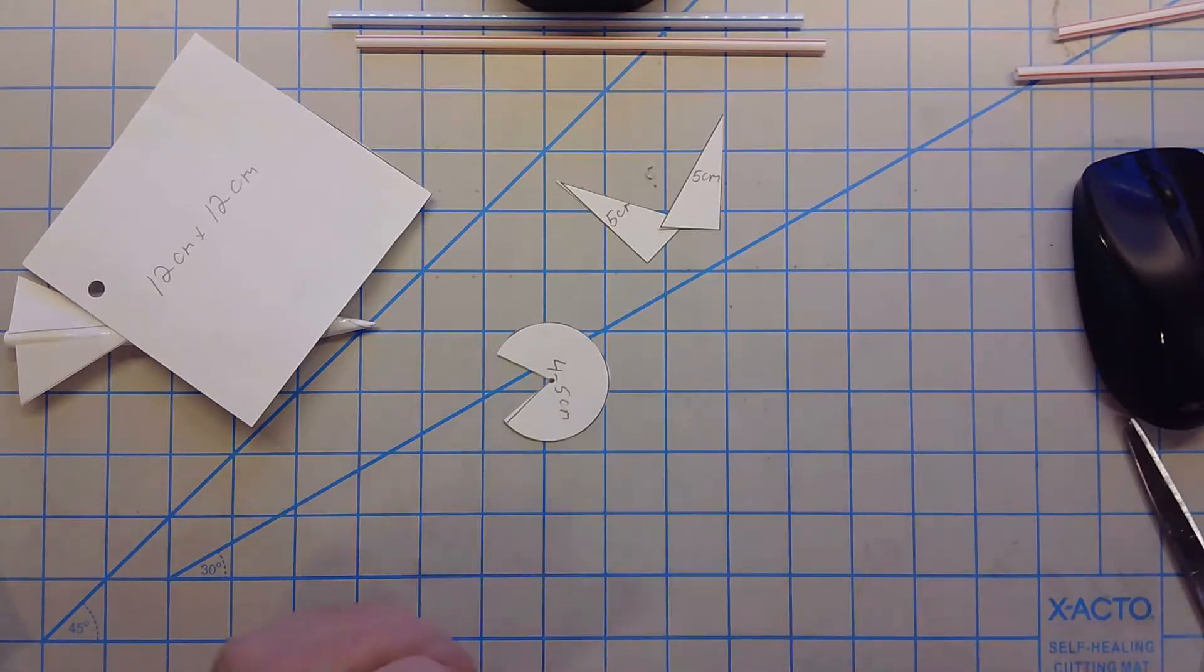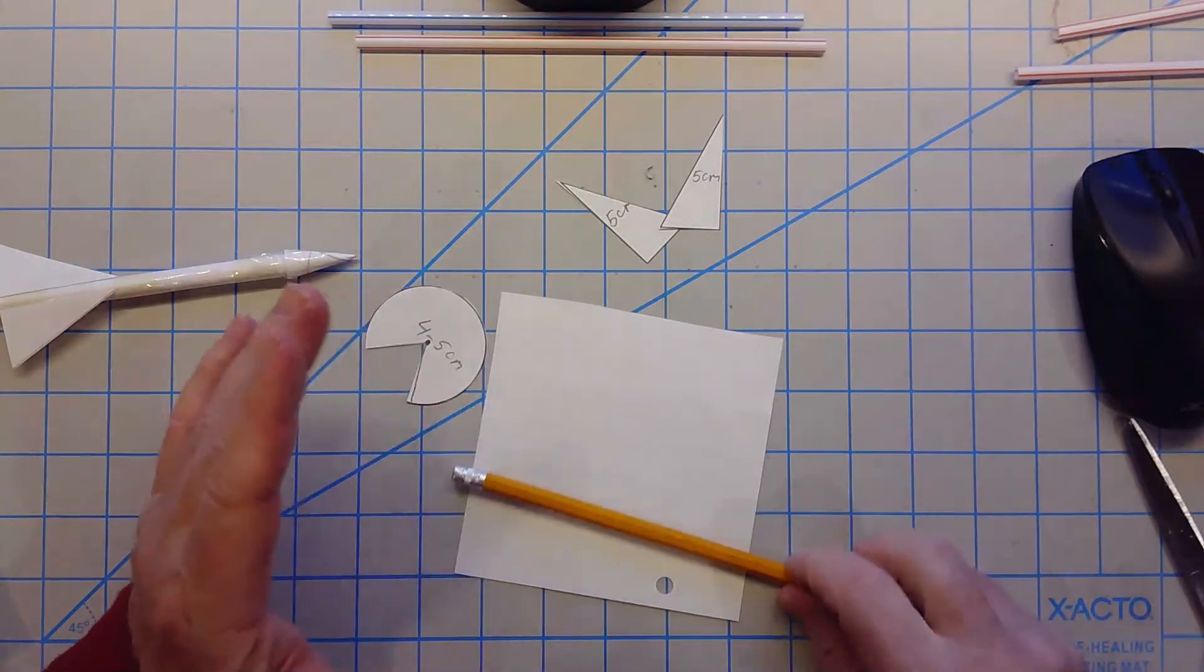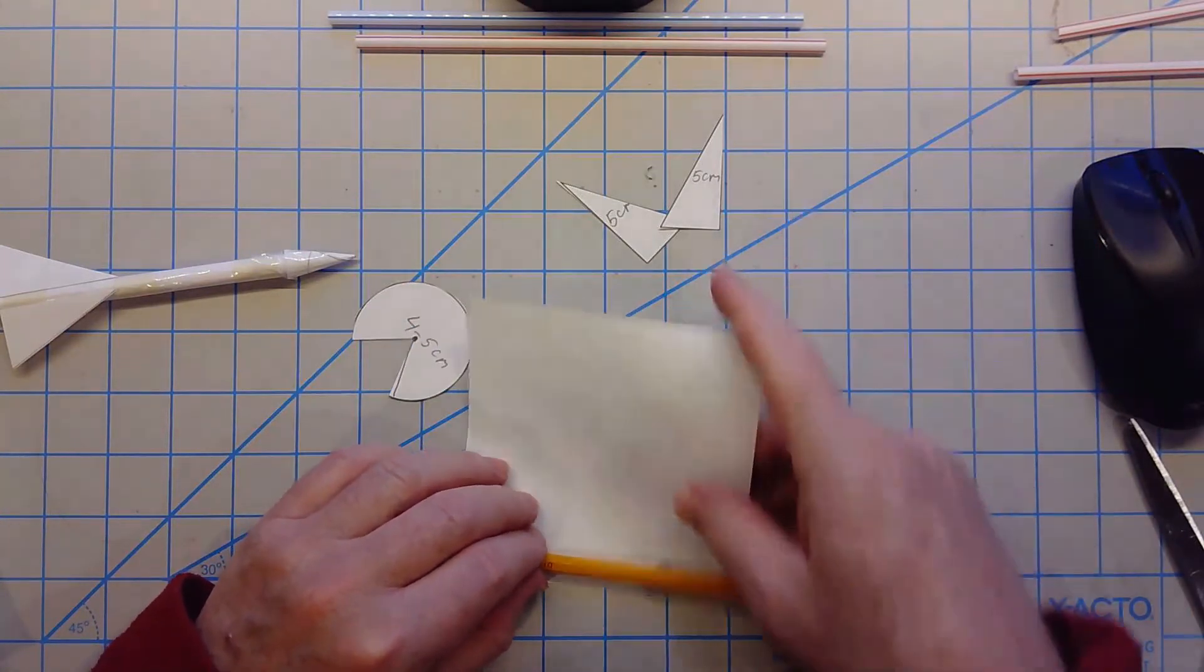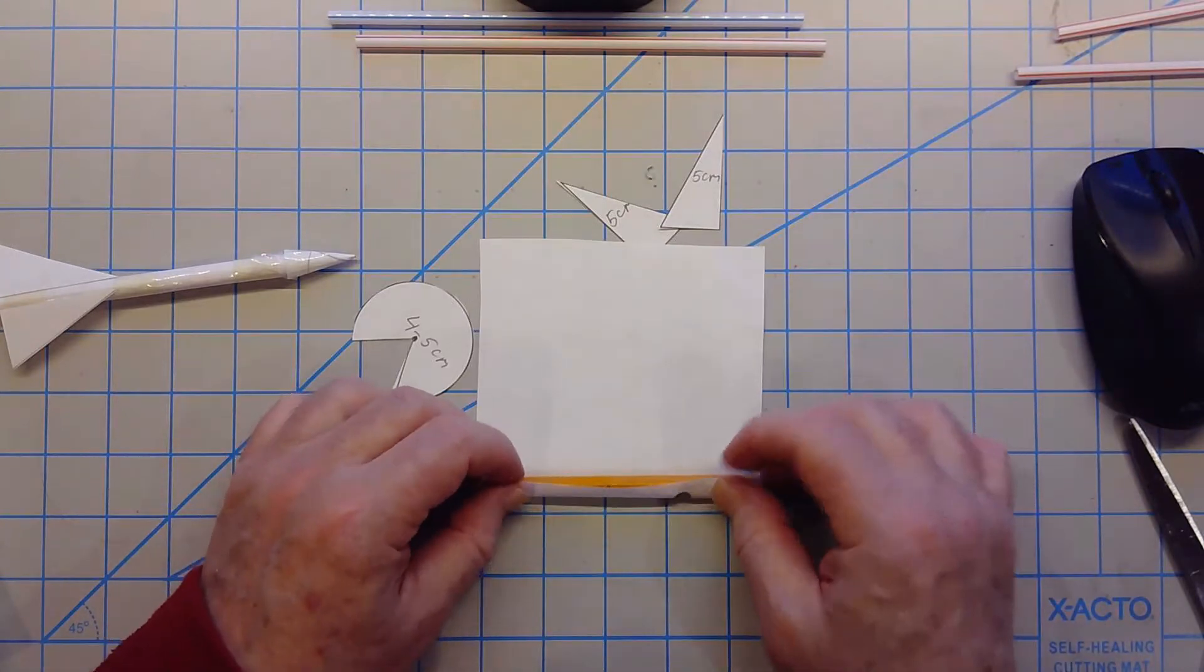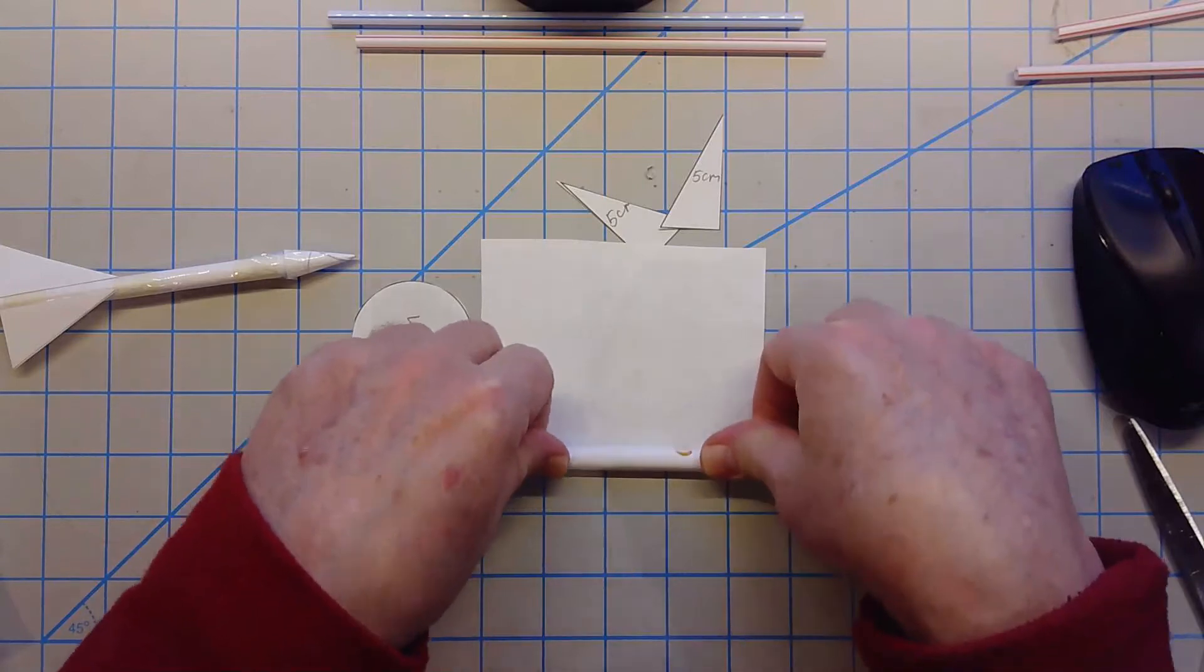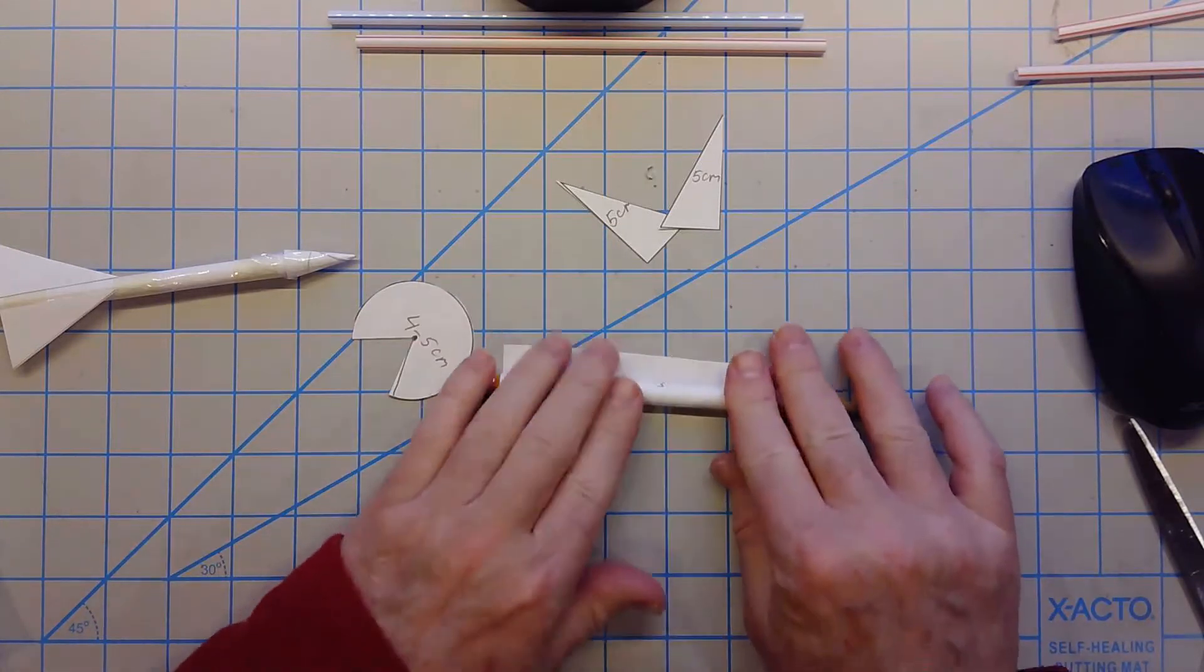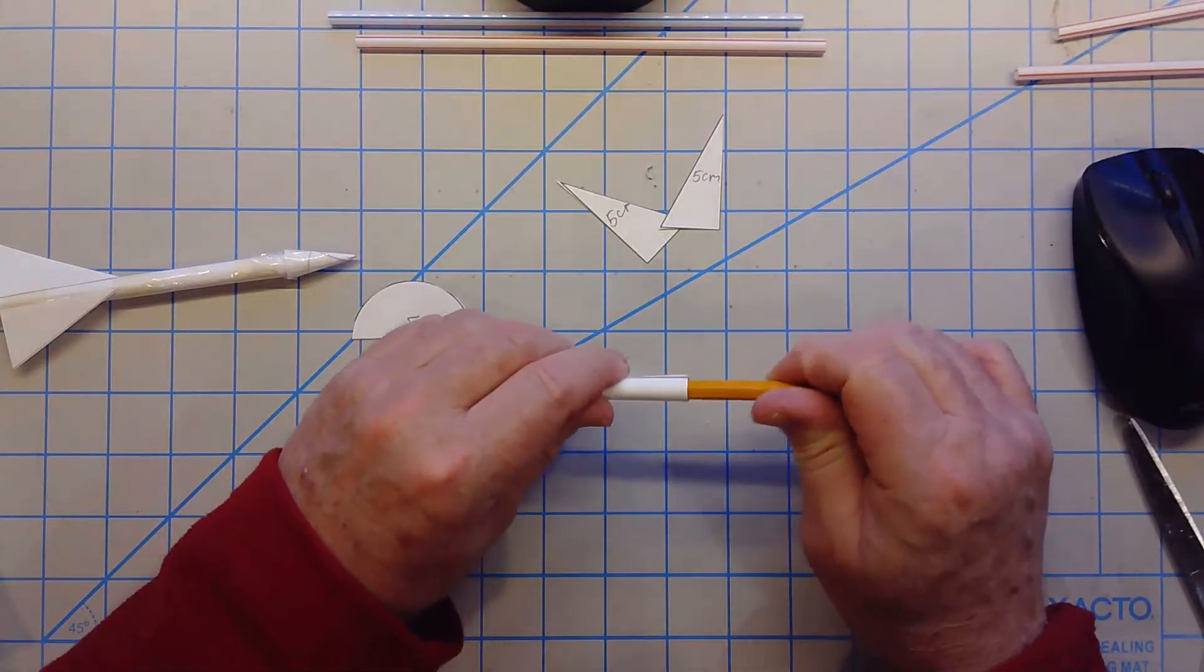Now first thing you do, because it's called a pencil rocket, you need a pencil. You roll your paper up, it doesn't matter which side because it's 12 by 12, so you roll it around the pencil like this. Roll it around, make it tight, and then pull the pencil out.